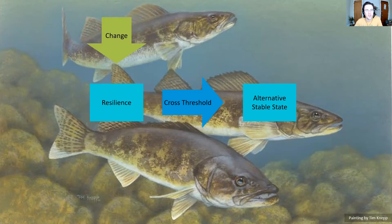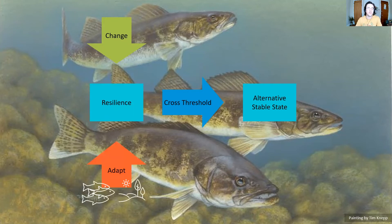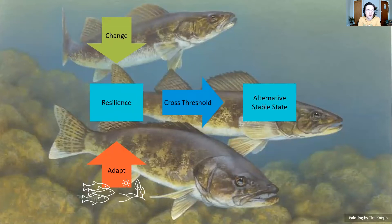I don't want to be all doom and gloom — there are things that lake organizations can do to help. The first one is adaptation. Adaptation consists of actions you can take to increase the resilience of a system — in this case, the fish population. A couple of examples would be stocking the lake, adding juvenile fish if the fish aren't reproducing naturally, or improving the natural shoreline so there are places for young fish to hide that also filter out nutrients.